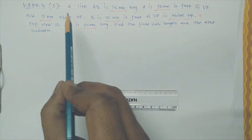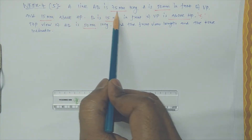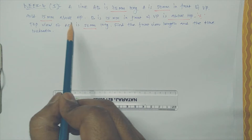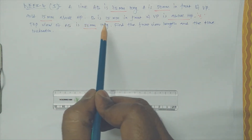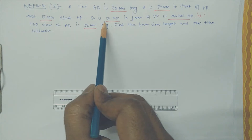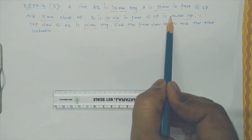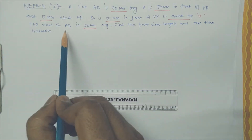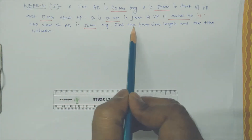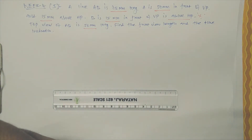This class covers Week 4, Problem 5. A line AB is 75mm long — that is the true length. Point A is 50mm in front of VP and 15mm above HP. Point B is 15mm in front of VP. Notice the angle is not specified, but the top view length AB is 50mm long. We need to find the front view length and the true inclination angle.